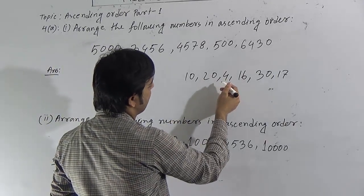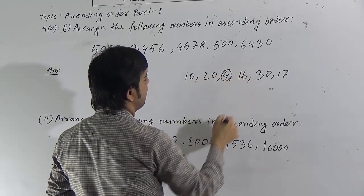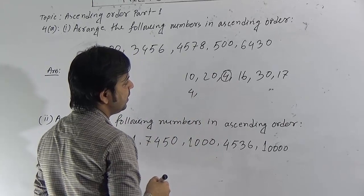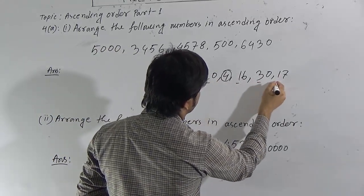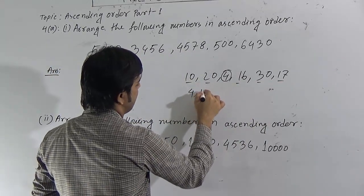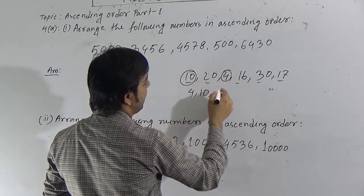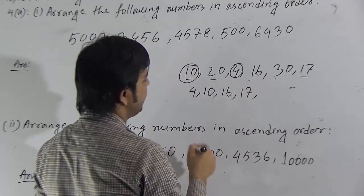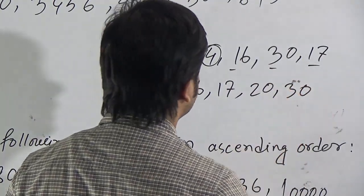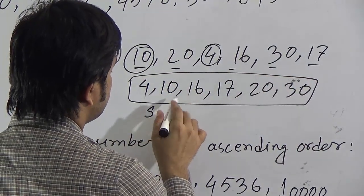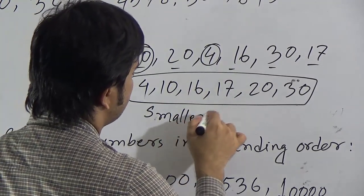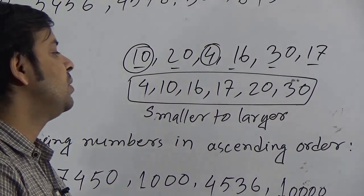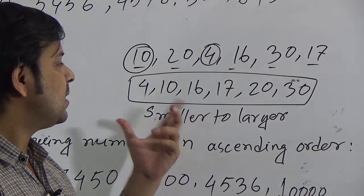Dear students, if you observe the numbers here, 4 is a single digit number, so it will be the smallest among these numbers. So we write 4 first. Then, among the remaining numbers 10, 20, 16, 30, 17 — 10 is the smallest. So next we write 10. Now left are 16, 17, 20, 30. So we write 16, then 17, then 20, and then 30. This order is from smaller to larger. I have arranged the numbers smaller to larger.